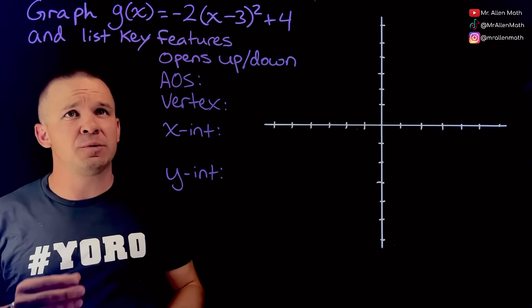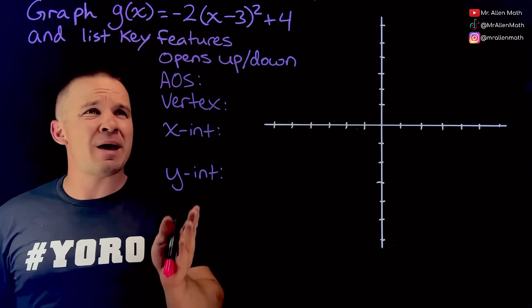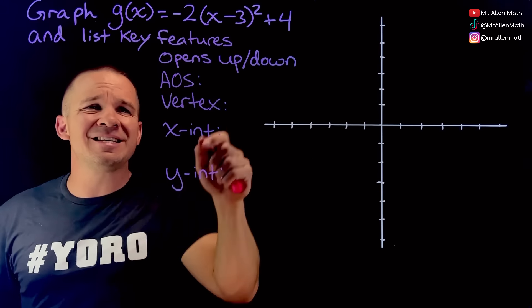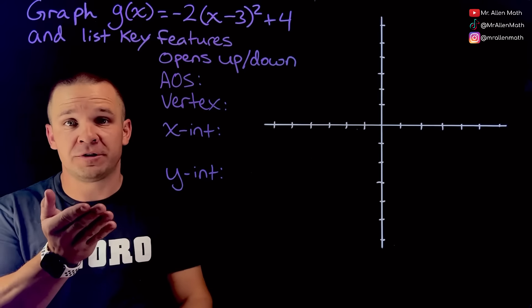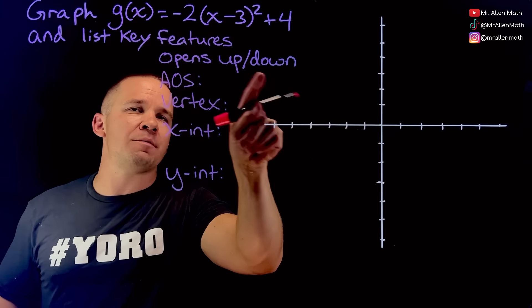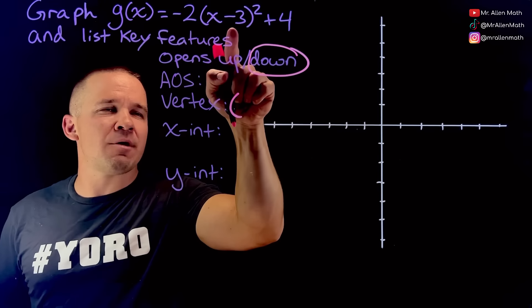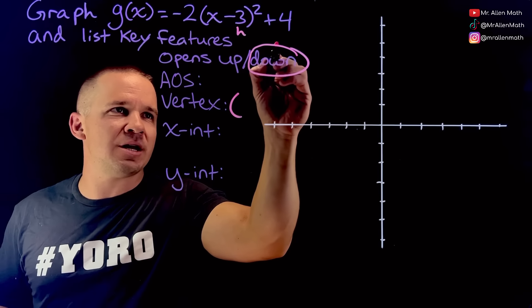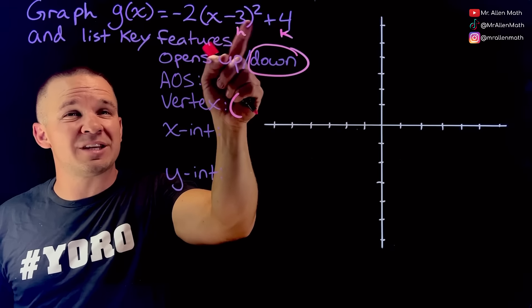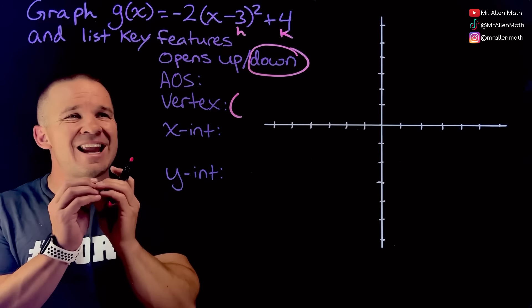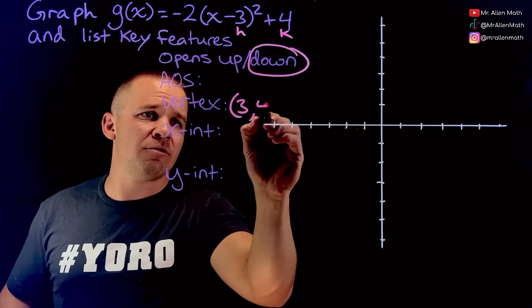Who doesn't love graphing quadratic functions? We've got one that is g of x equals negative two times the quantity x minus three squared plus four. This bad boy is in vertex form. Guess which one is the easiest to get when it's in vertex form? The vertex. Also, which way it's opening — it's a negative, so we'll go ahead and circle down. Got to watch out for that x minus three because our form is x minus h quantity squared, so the sign switches. It is the opposite sign from what's in the parentheses.